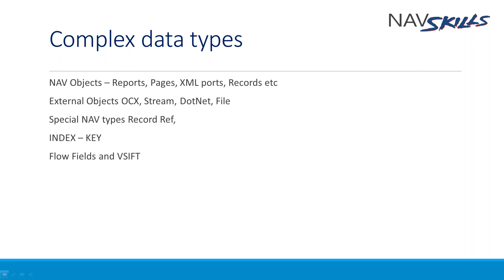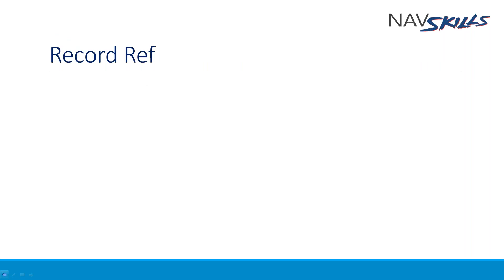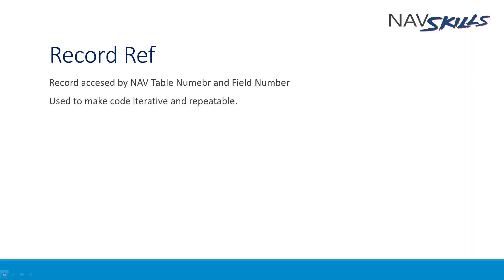The focus is vSIFT because it is what made Navision what Navision is. Let's just touch on record ref — I don't want to go into much detail. Basically, instead of using the name of a variable like sales line or invoice header, we can create a reference to a variable by its table number and field number in Navision.